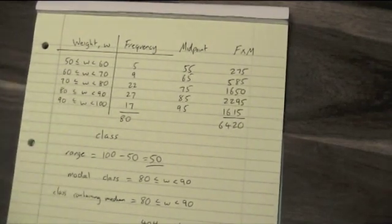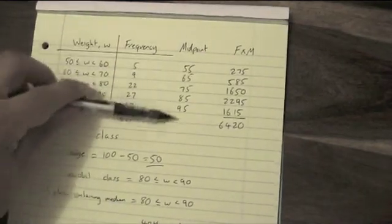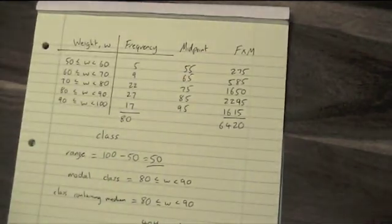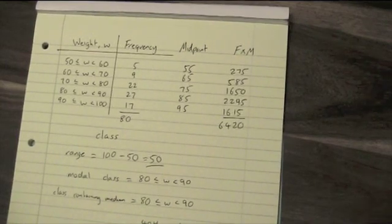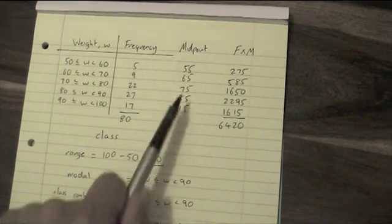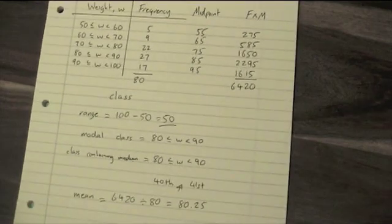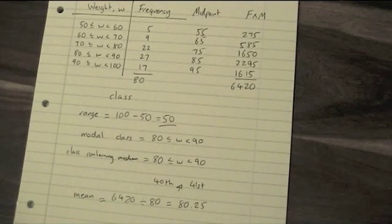This is exactly the same as when we did normal frequency tables, except for the fact that we had this midpoint going on, which is why questions will say estimate the mean or calculate an estimate for the mean. Don't worry about the word estimate being in there. It's just this step that means we've made an assumption that makes it an estimate. So that's how it's done: the range, modal class, the median, and the mean for grouped frequency tables.